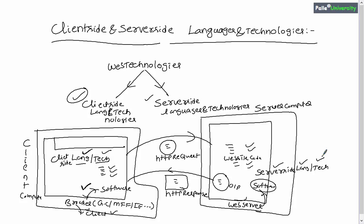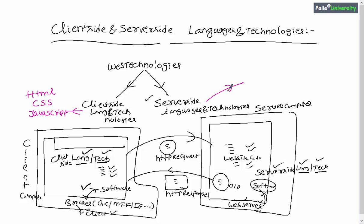Languages and technologies understood and executed by browsers are called client-side languages and technologies. Languages and technologies understood by web server software are called server-side languages and technologies. Under the client-side languages and technologies list, we have HTML, CSS, and JavaScript.